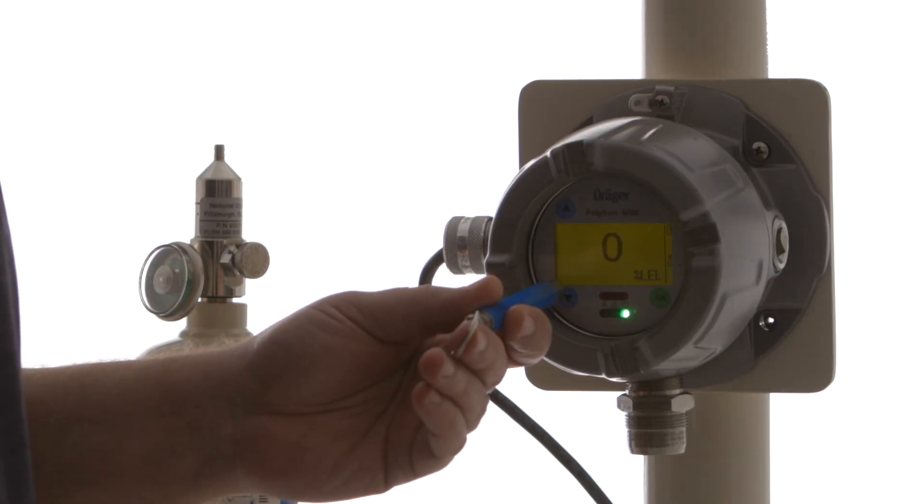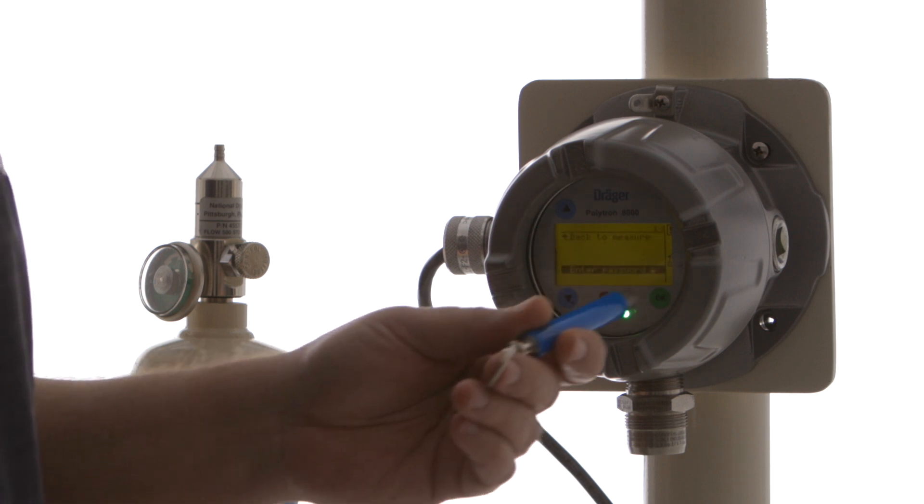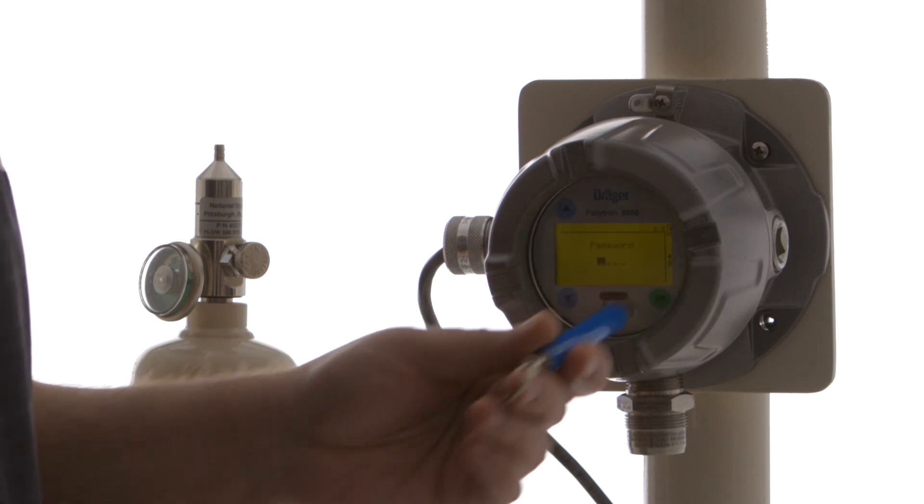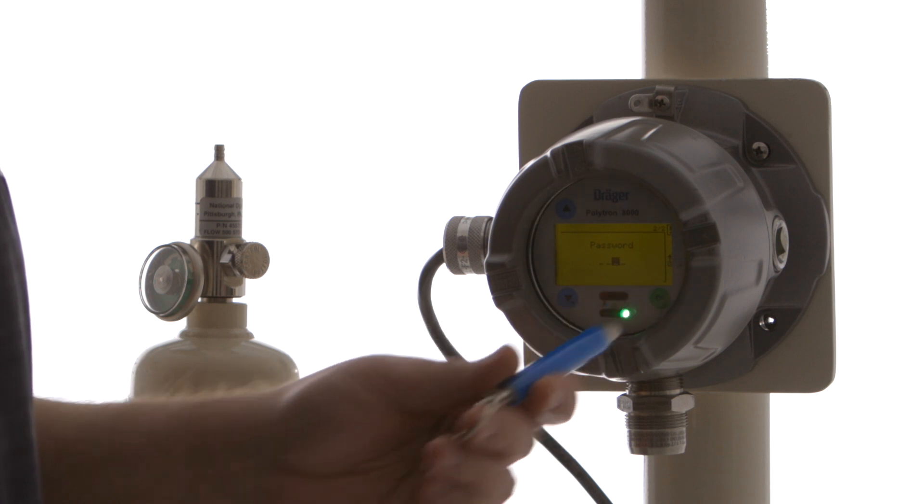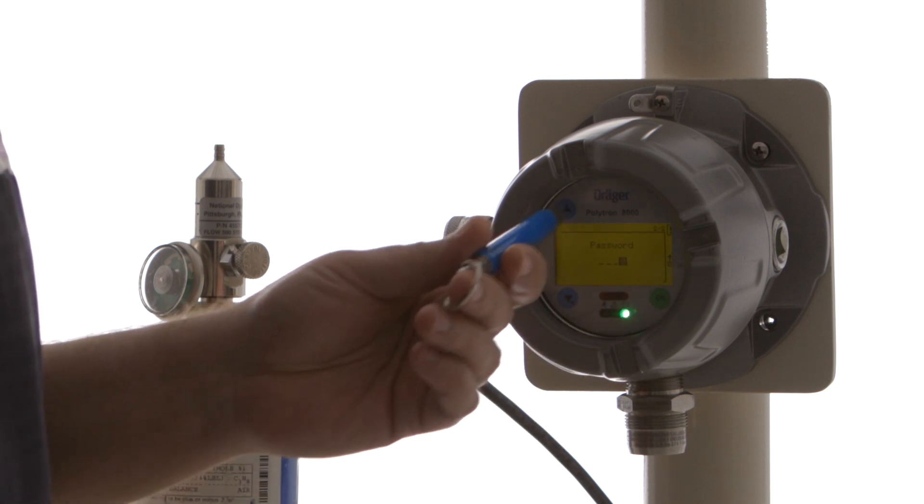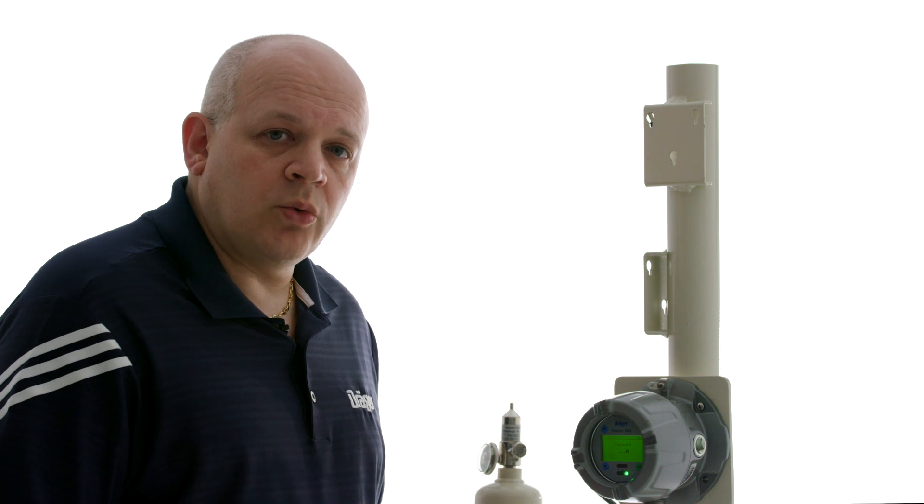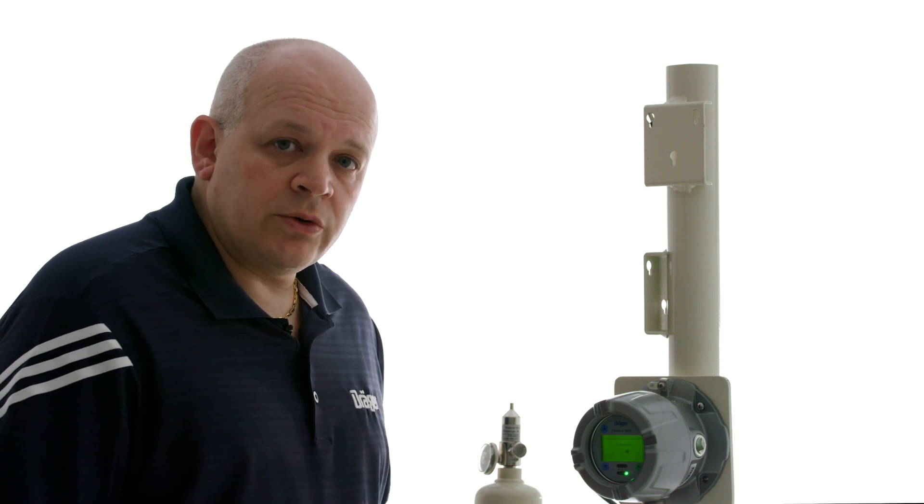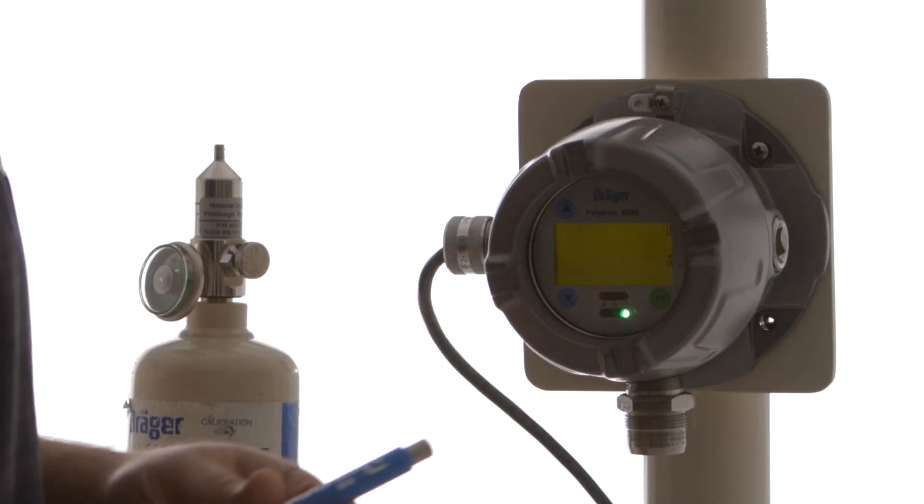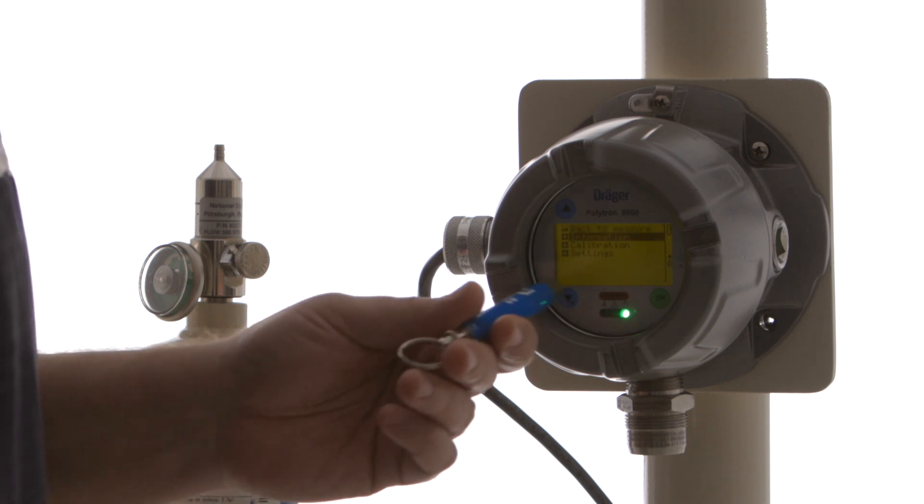So we just press and hold on the down arrow key to get into the menu and we're going to select the default password of 2 that will let us do calibration or configuration. You can also choose a password of 1 that will let you only do a calibration. So we choose calibration.